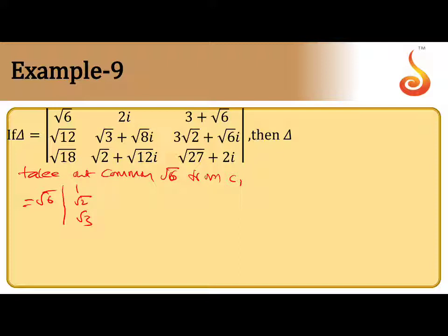Here nothing will be common: 2i, √3 + √8i. Correct √8 as 2√2i, that is √12 is 2√3i. Next, 3 + √6 as it is. Next, 3√2 + √6i. Correct √27 is 3√3 + 2i.